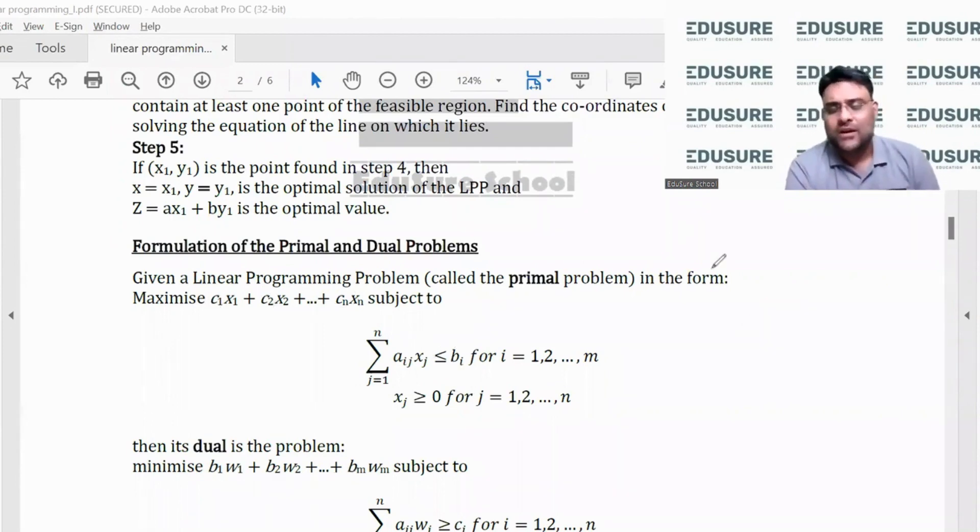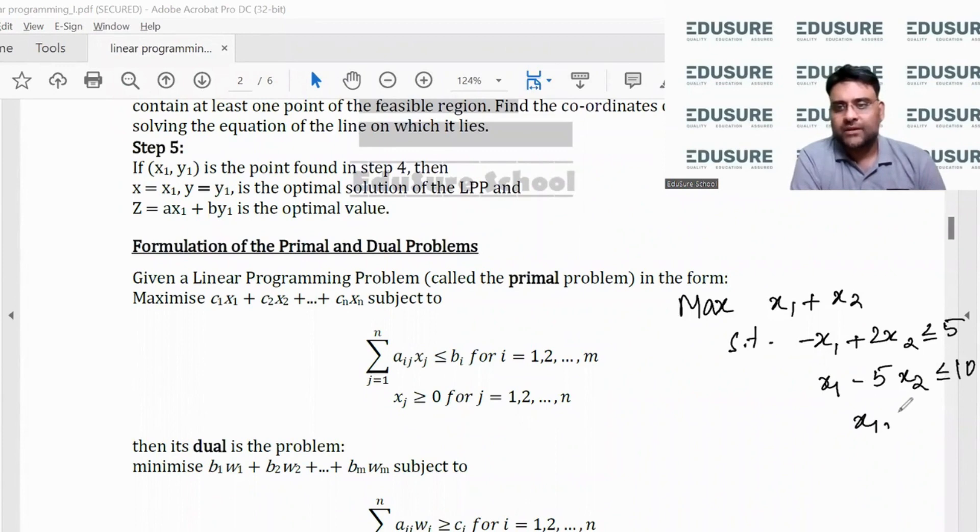Let's take a simple example. If I tell you to maximize x1 plus x2 subject to minus x1 plus 2x2 less than equal to 5, and x1 minus 5x2 less than equal to 10, with x1 and x2 greater than equal to 0.